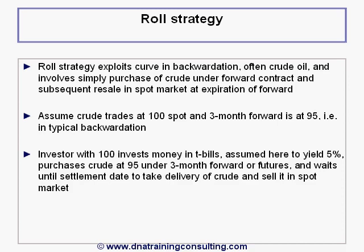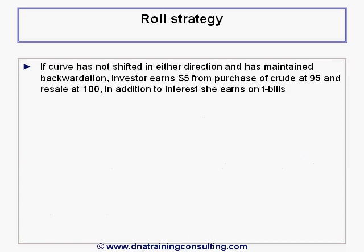An investor with 100 invests this money in T-bills, assumed here to yield 5%, purchases crude at 95 under a 3-month forward contract, and waits until the settlement date to take delivery of the crude and to sell it in the spot market. The T-bills are pledged as collateral under the forward contract. If the curve has not shifted in either direction but has maintained its backwardation exactly as before, the investor pockets $5 from the purchase of the crude at 95 and its resale at 100, in addition to the interest she earns on T-bills.